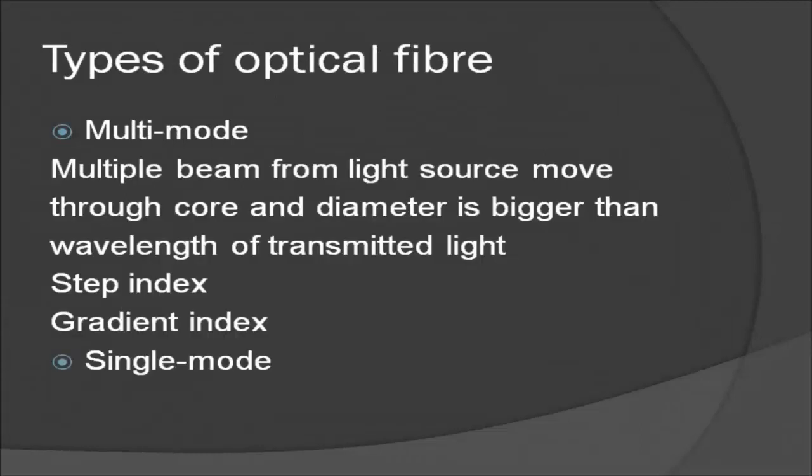There are two types of optical fiber. The first one is the multimode, where multiple beams of light move through the core in different paths, and the diameter is much bigger than the wavelength of the transmitted light. In multimode step index fiber, the density of the core remains constant from the center to the edge. As a beam of light moves through this constant density in a straight line until it reaches the interface of core and cladding, there is an abrupt change in the density which alters the angle of the beam's motion, and because of this sudden change, it contributes to the distortion of the signal as it passes through the fiber.